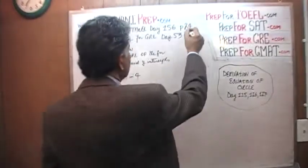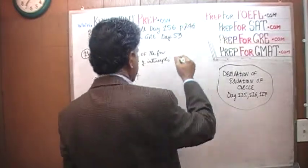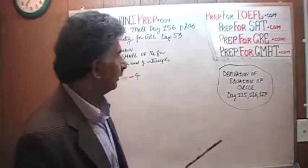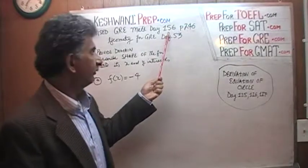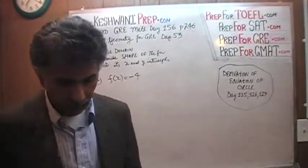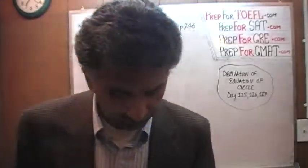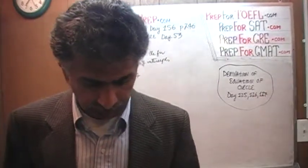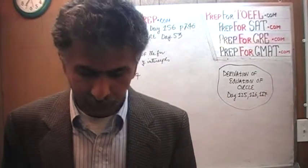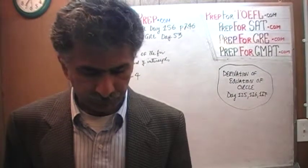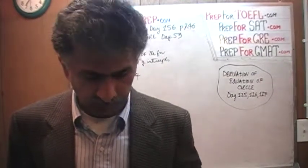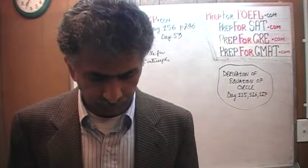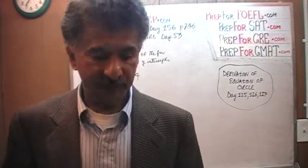Today is our lesson number 156. Let's take a look at it. The very first one says: for each of the following functions — and they give you five of them — they are asking you to give the domain, provide a description of the graph and the shape of the graph, and figure out the X and the Y intercept.